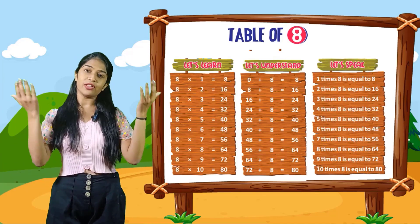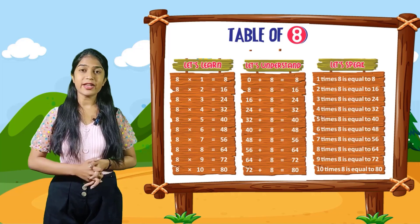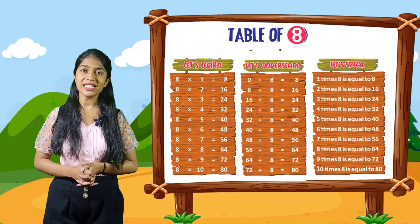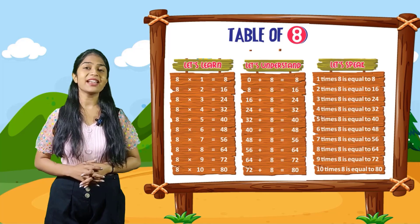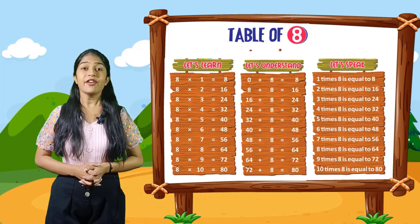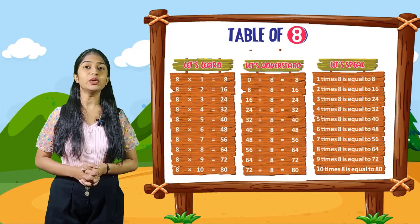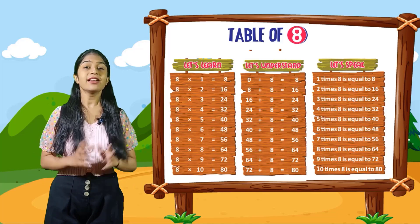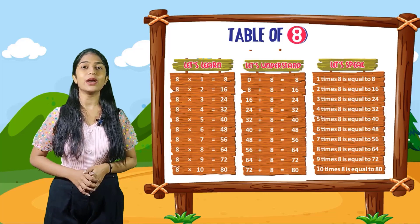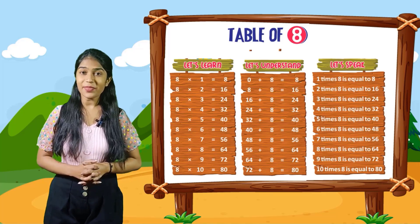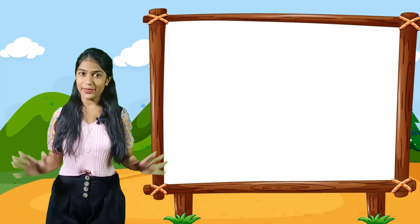So now let's speak. Speak out with me. 1 times 8 is equal to 8. 2 times 8 is equal to 16. 3 times 8 is equal to 24. 4 times 8 is equal to 32. 5 times 8 is equal to 40. 6 times 8 is equal to 48. 7 times 8 is equal to 56. 8 times 8 is equal to 64. 9 times 8 is equal to 72. 10 times 8 is equal to 80.